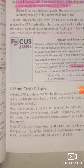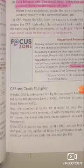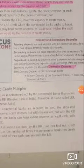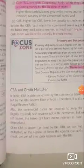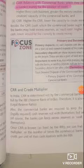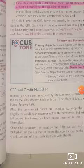CRR stands for Cash Reserve Ratio. The Cash Reserve Ratio is determined by the RBI — the central bank decides how much cash commercial banks must keep in reserve. Therefore, it is also called LRR — Legal Reserve Ratio — meaning the amount of cash commercial banks are legally bound to keep with themselves. CRR and LRR both refer to the same concept.